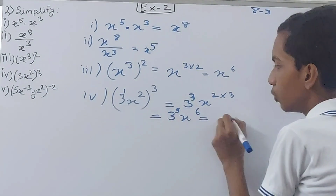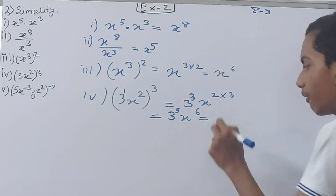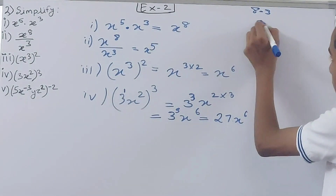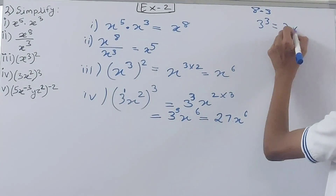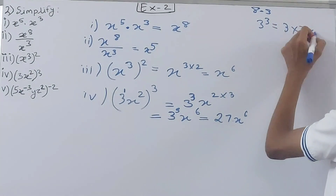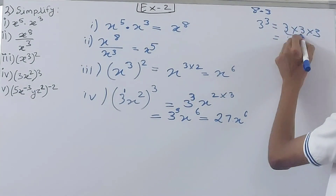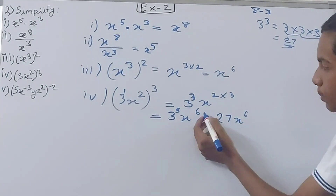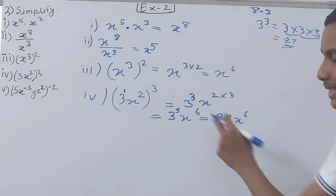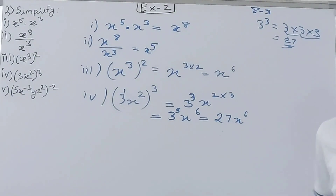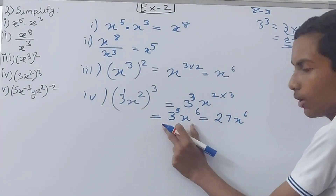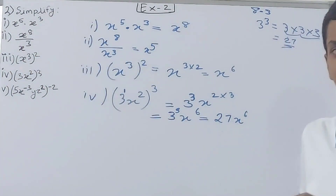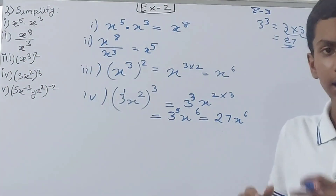So this becomes 3 cubed times x to the power 6. And 3 cubed is 3 × 3 × 3 = 27. So the answer is 27x to the power 6. We cannot leave it in the previous form — we must simplify to the simplest form, so the final answer is 27x⁶.